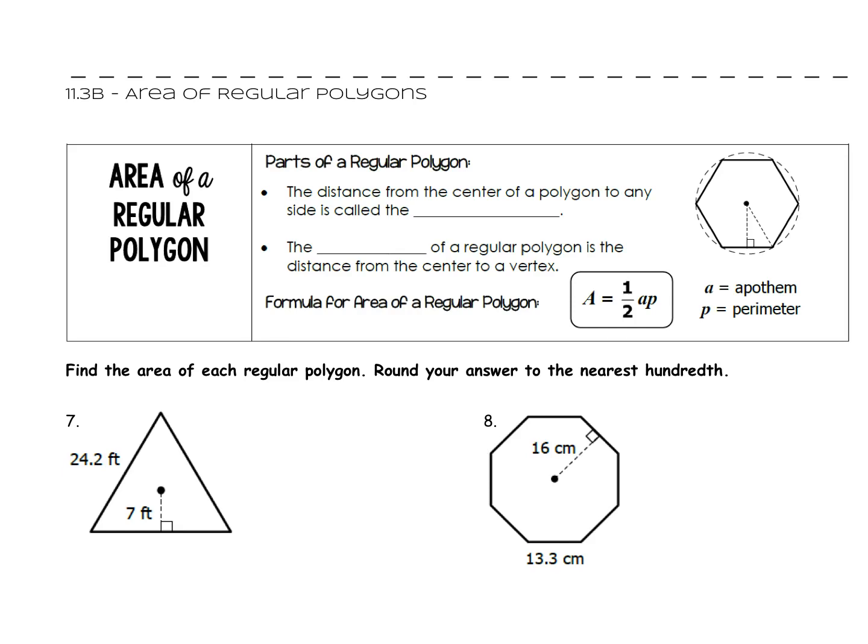So getting started with today's lesson, we're going to talk about the area of a regular polygon. I need to introduce you to a new word. It's an odd word, but it's important to us. It's called a apothem. The distance from the center of any polygon to a side is called the apothem. The apothem is this particular piece right here. It looks like the height of that triangle. That is the apothem.